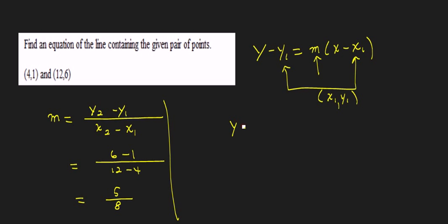So we take our y minus y1. Like I said, we're going to be using this guy now. So y minus y1 is going to be y minus 1 is equal to m, where we said m was 5 eighths, times x minus x1, and x1 is 4.